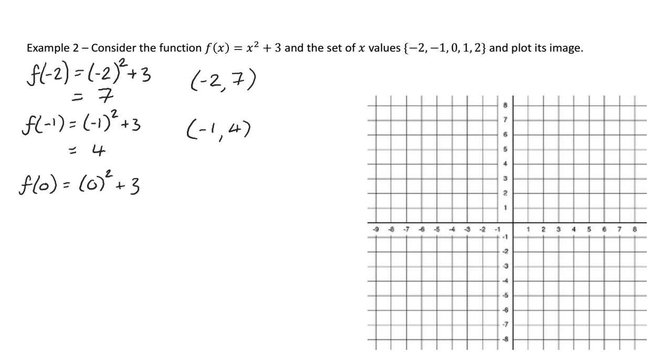f of 0 is going to be 0 squared plus 3, so that's going to give me 3. f of 1, 1 squared plus 3 is 4. And then finally, f of 2 gives me 2 squared, add 3, which gives me 7. So I've got my five coordinates.